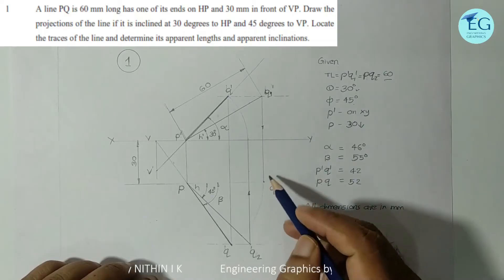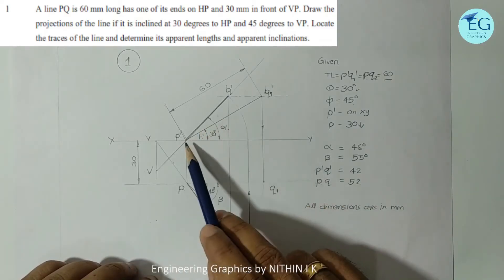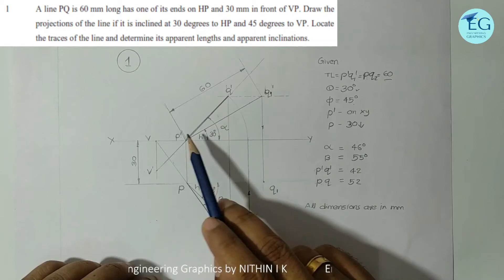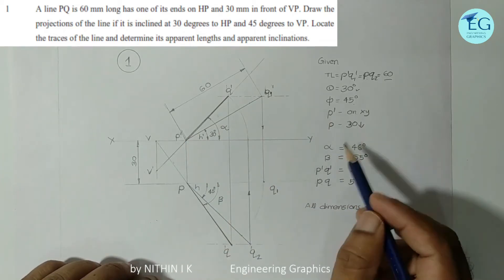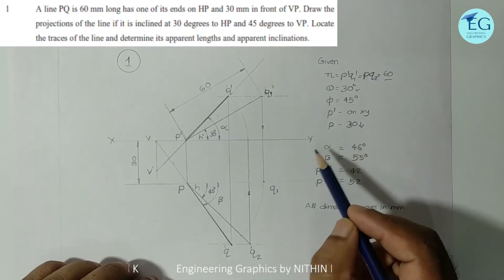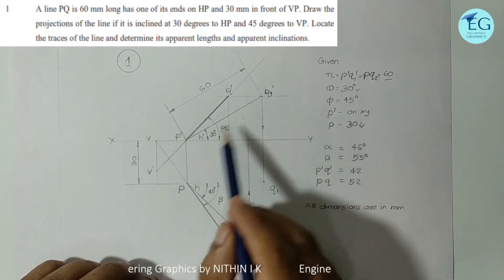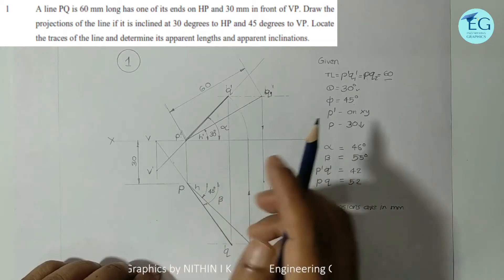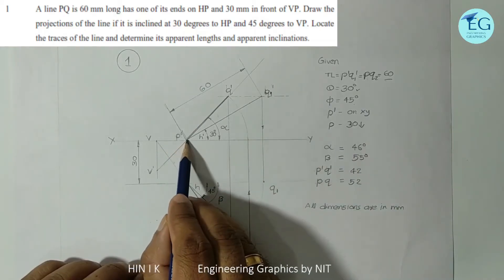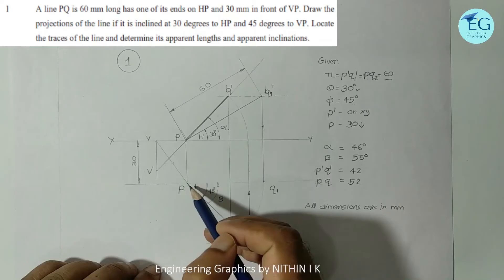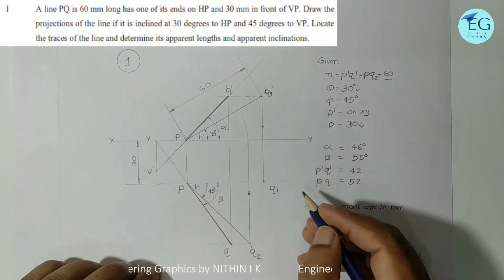Note the marks assigned for each step — the name and dimensions must be correct. If the name or dimensions are not correct, you will lose marks for neatness and dimension. We locate P on HP: P-dash is on XY, and P is 30mm below XY. This step carries 2 to 4 marks.